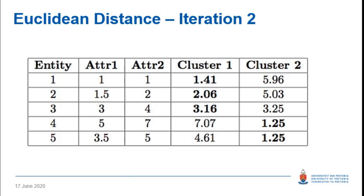K-means is a very simple but very powerful algorithm that can be used in complicated problem domains to get good results. This brings us to the end of unsupervised learning. In Tuesday's lecture we'll look at ant colony optimization, and in Wednesday's lecture we'll cover particle swarm optimization. That's it for today's lecture.